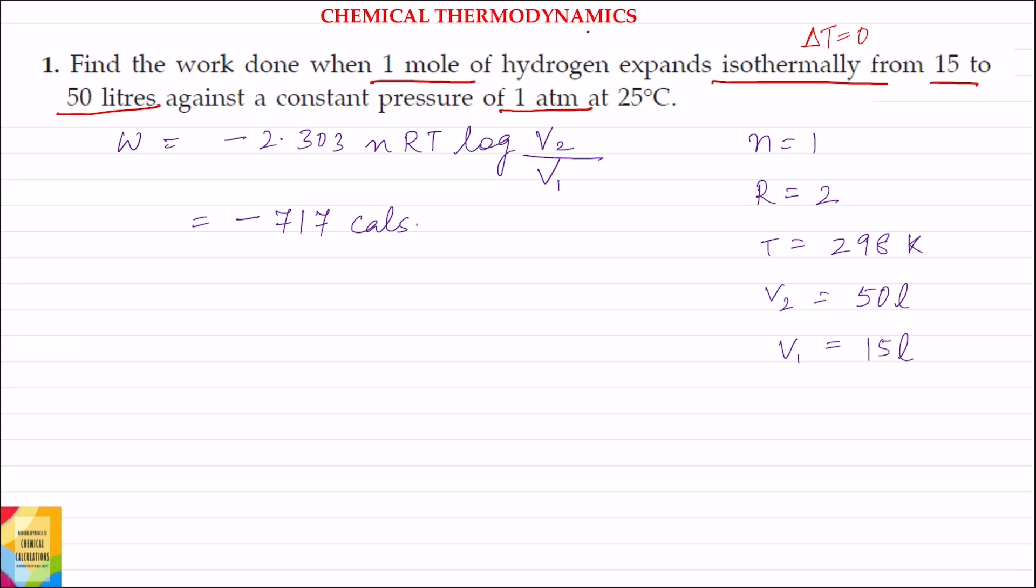Now work done by the gas is taken as negative. N value is 1. R value in calories is approximately 2. Temperature in Kelvin will be 298 Kelvin. Final volume 50 liters, initial volume 15 liters.